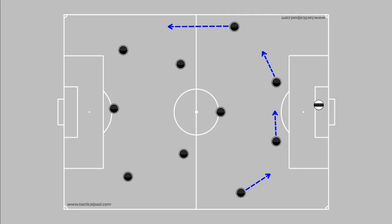Alternatively, a back four can be converted into a back three with just one full back moving forwards. The remaining three players then shift across to take up central positions as a back three.